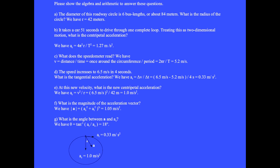Question D: The speed increases to 6.5 meters per second in 4 seconds. What is the tangential acceleration? We have a sub t equals delta v over delta t equals 6.5 minus 5.2 meters per second divided by 4 seconds, equals 0.33 meters per second squared. Question E: At this new velocity, what is the new centripetal acceleration? We have a sub c equals v squared over r equals the square of 6.5 meters per second divided by 42 meters, equals 1.0 meters per second squared. Question F: What is the magnitude of the acceleration vector? The magnitude of a equals the square root of a sub c squared plus a sub t squared, equals 1.05 meters per second squared.